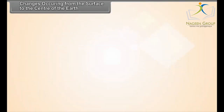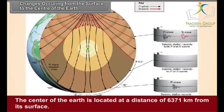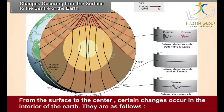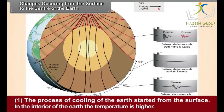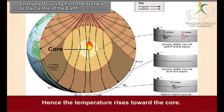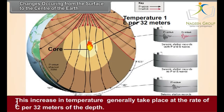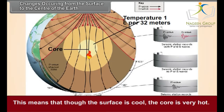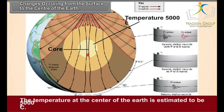Changes occurring from the surface to the center of the Earth. The center of the Earth is located at a distance of 6371 kilometers from its surface. From the surface to the center, certain changes occur in the interior of the Earth. Number 1: The process of cooling of the Earth started from the surface. In the interior of the Earth, the temperature is higher, and hence the temperature rises towards the core. This increase in temperature generally takes place at the rate of 1 degree Celsius per 32 meters of depth. This means that though the surface is cool, the core is very hot. The temperature at the center of the Earth is estimated to be 5000 degrees Celsius.